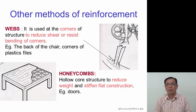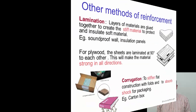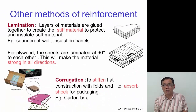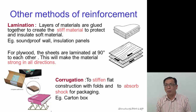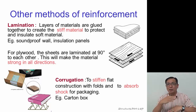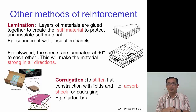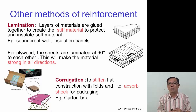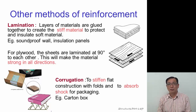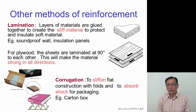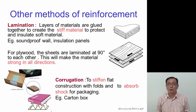Honeycombs are used in empty hollow core structures to reduce weight and stiffen flat construction — for example in wooden doors. Lamination reinforces material by layering one on top of the other; for plywood, the wood is laminated at 90 degrees to increase strength in most directions. Corrugation is used to stiffen flat construction, resist bending, and absorb shock for packaging.